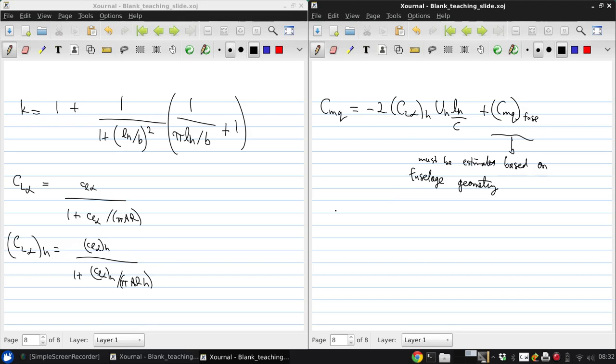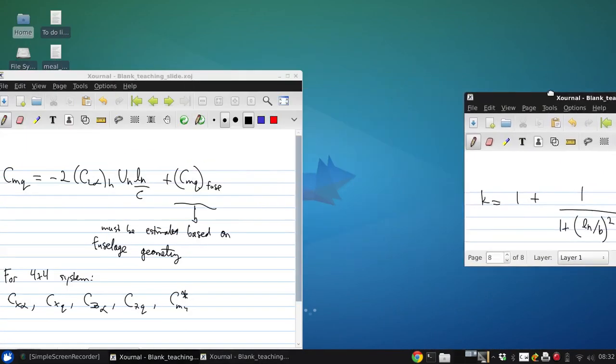Now, if we were considering the full 4x4 system, we would also need Cxα, Cxq, Czα, Czq, and Cmu and Cmu star. And we can express all of these in terms of quantities that we can determine.